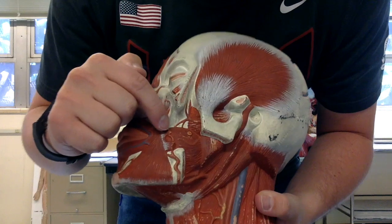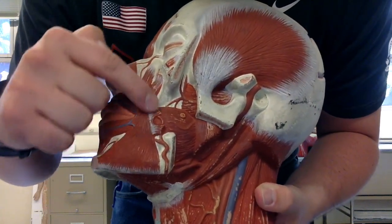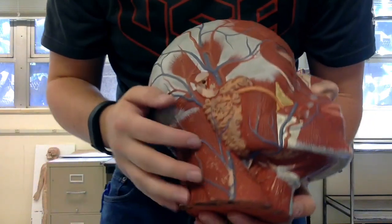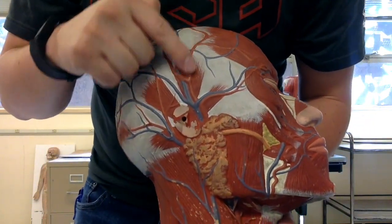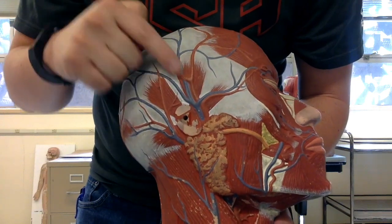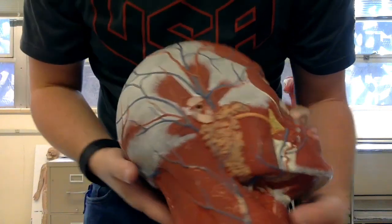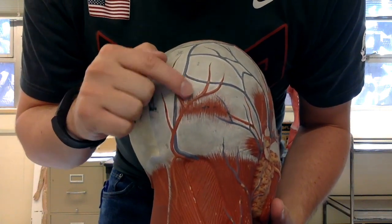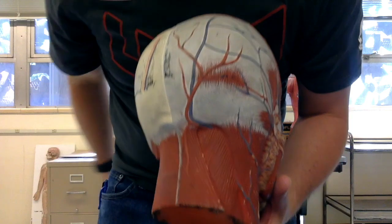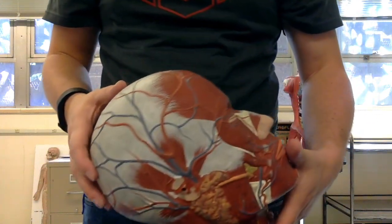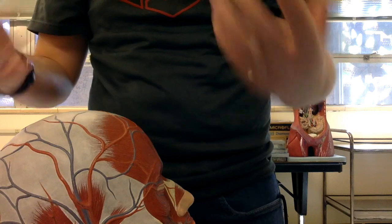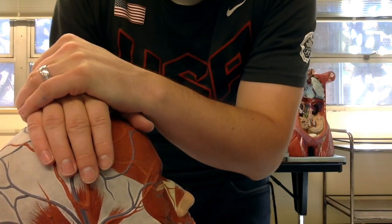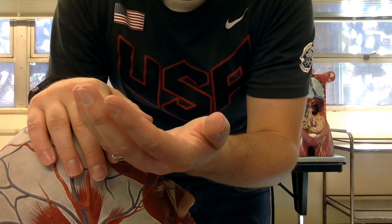The external carotid artery is going to branch into three superficial arteries: the facial artery, that red vessel supplying blood to the face; the superficial temporal artery, the red vessel going up the temple; and the occipital artery, that red vessel supplying blood to the occipital region in the back. Then you have the vertebral artery, which runs through the transverse foramen of your cervical vertebrae.